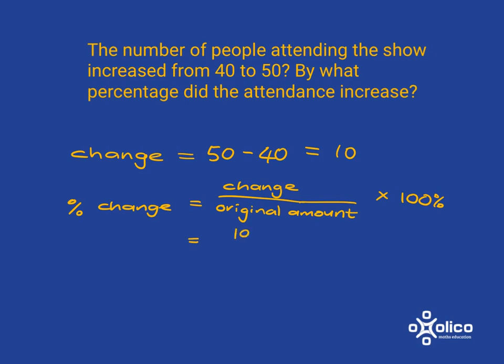So it was 10 people who joined. The original amount was 40 people, so it's 10 over 40, multiplied by 100%, which gives us 25%.